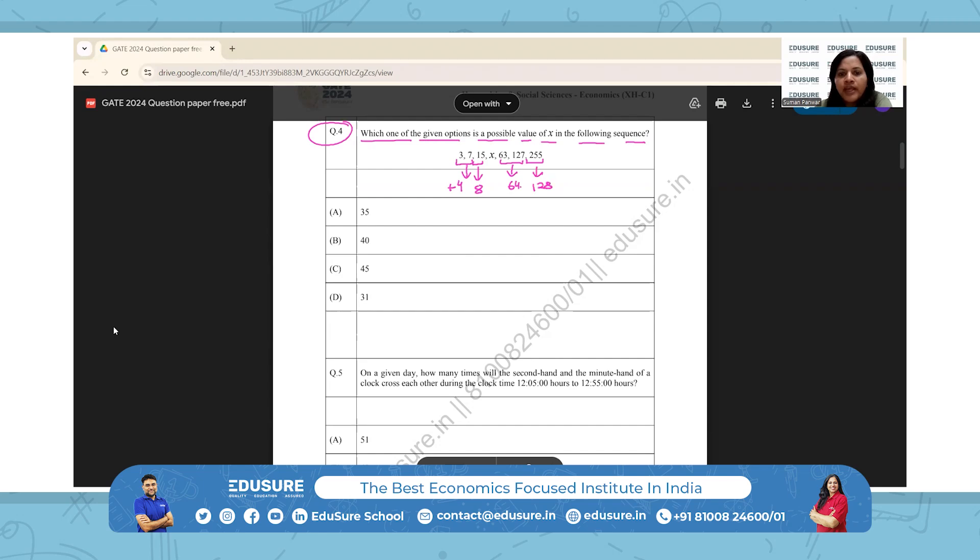So it is 4, 8, then there are gaps, then 64, 128. So let's try. Suppose there is a gap of 16, and then there's a gap of 32. So the sequence is completed: 4, 8, 16, 32, 64, 128.